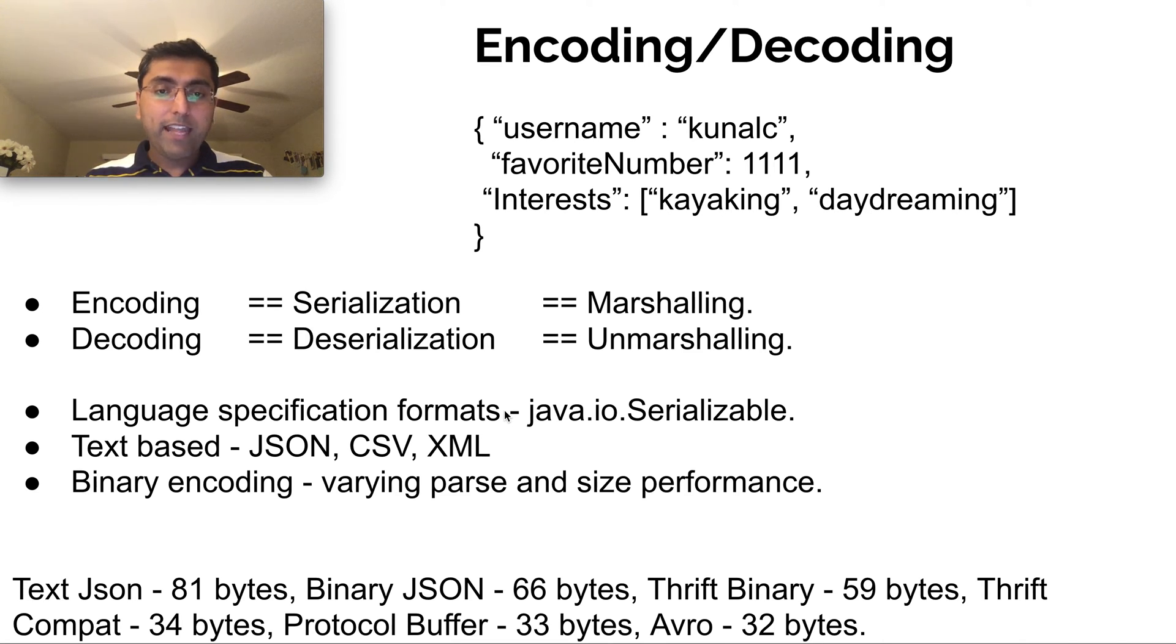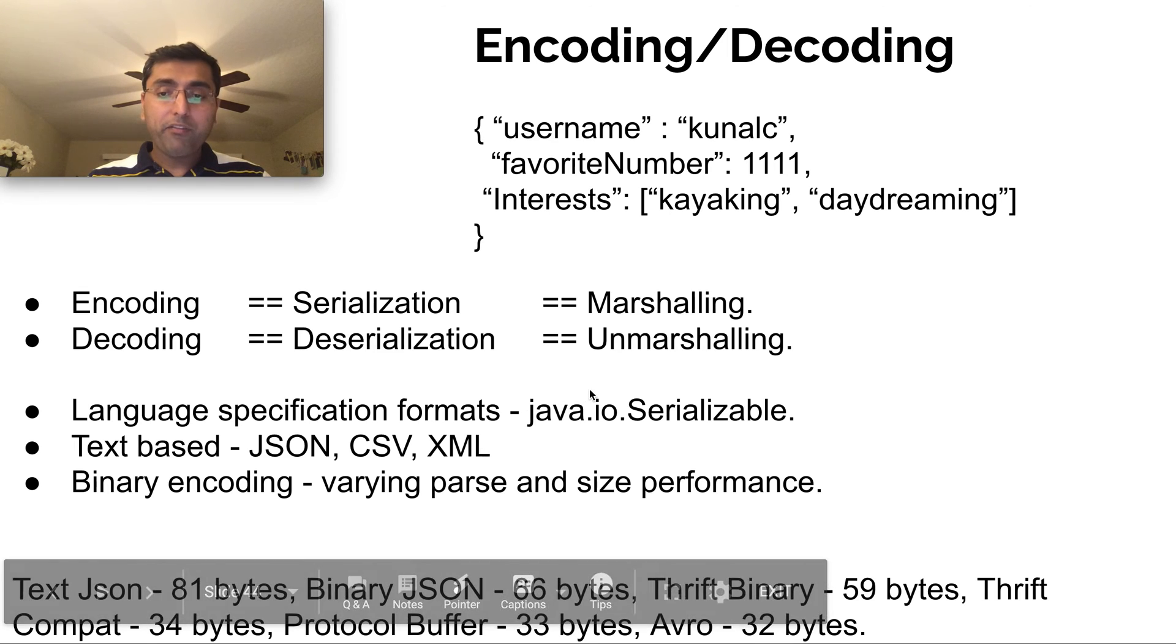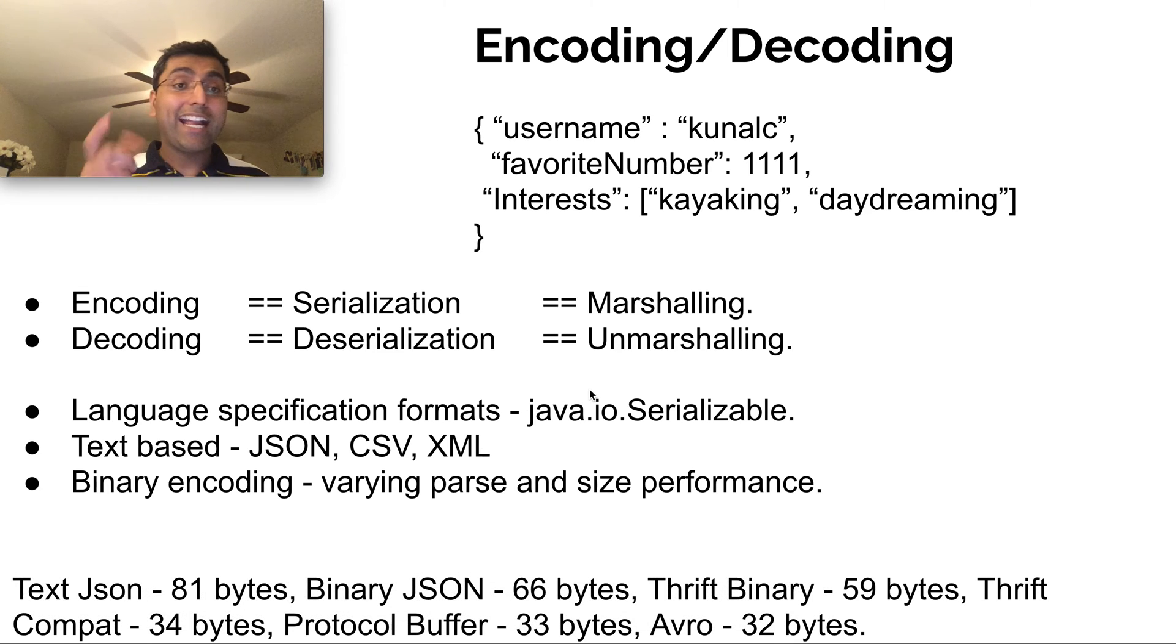And there are different mechanisms in which how each of these encoding mechanisms work. And there are pros and cons to each one of them. For example, Avro doesn't have the tag names or even the tag IDs. Like these usernames, favorite number, interests are keys. In Protocol Buffer and Thrift, they're converted into tag IDs and so they don't store the exact name over and over, which just takes so much space. In Avro, they don't even store that. There's a schema associated. Each of these have schemas, but there's various optimizations that they do to get to different encoding.